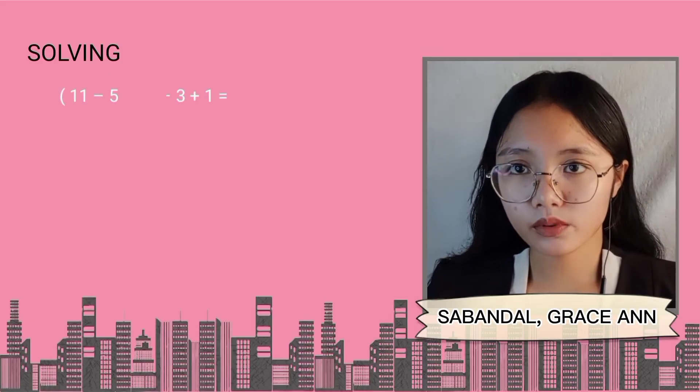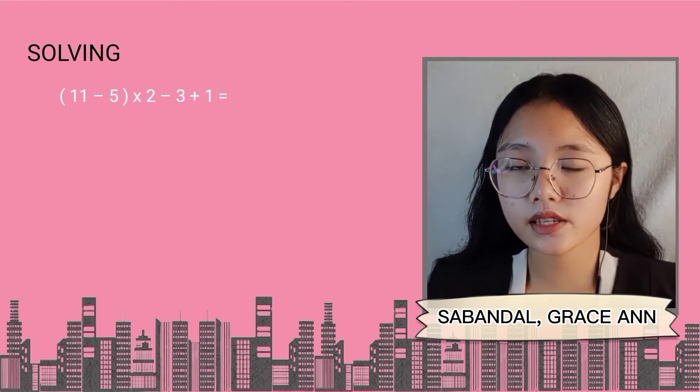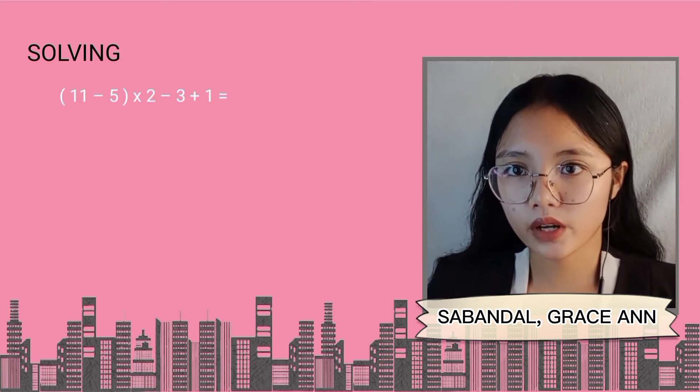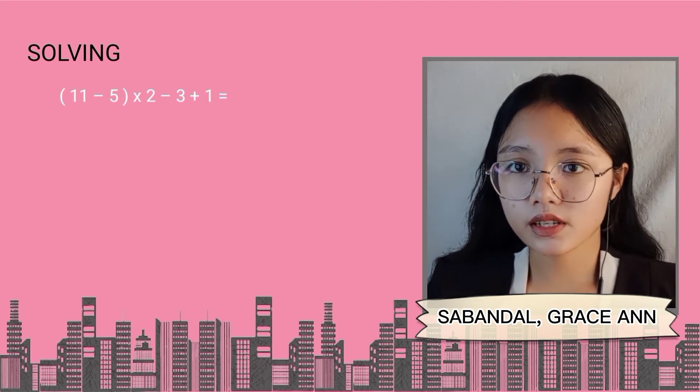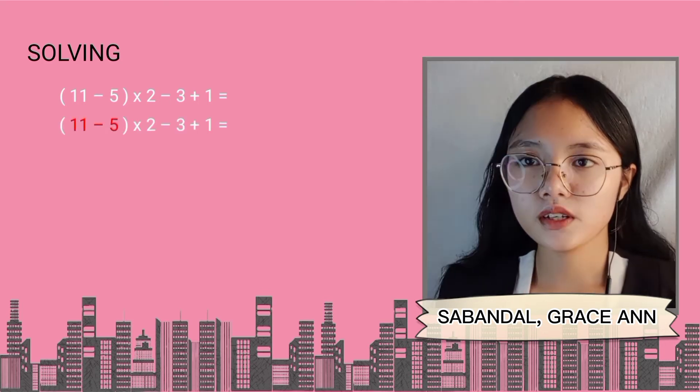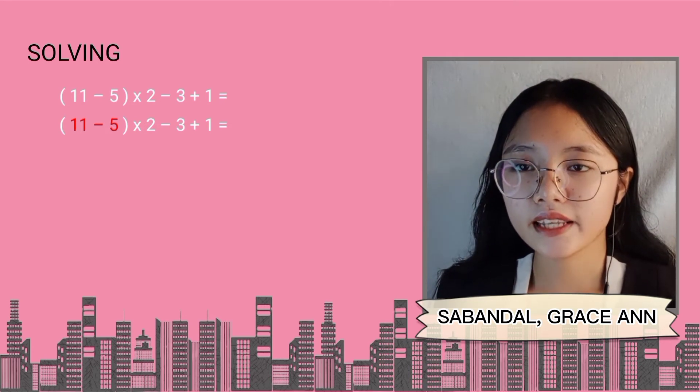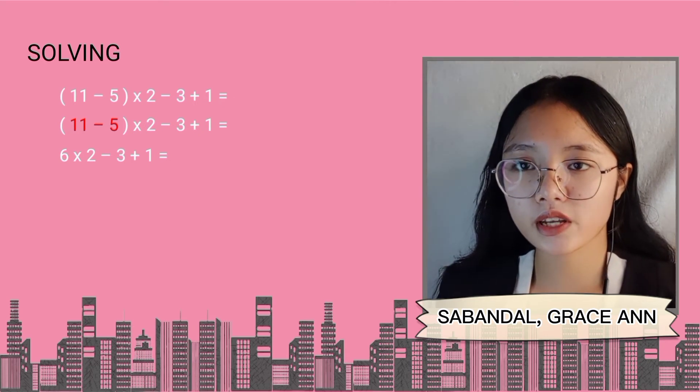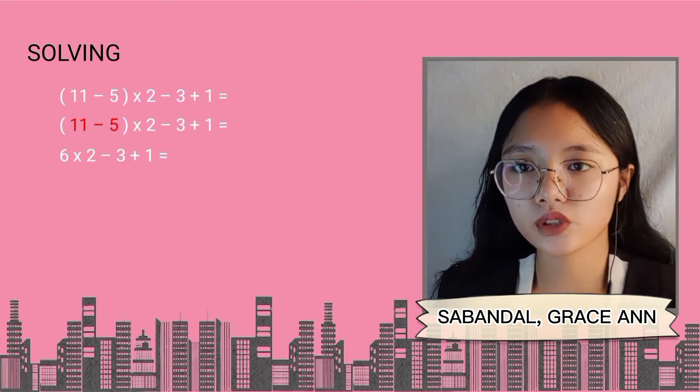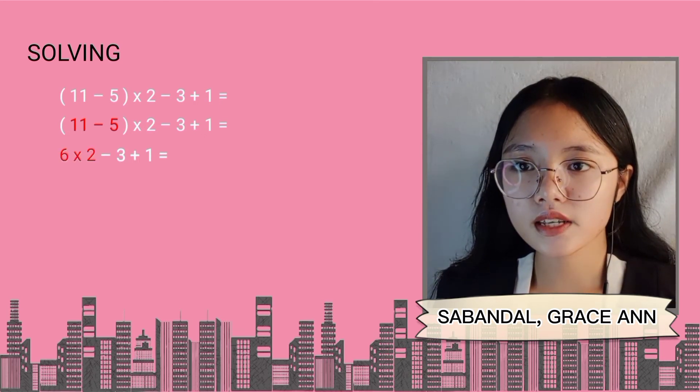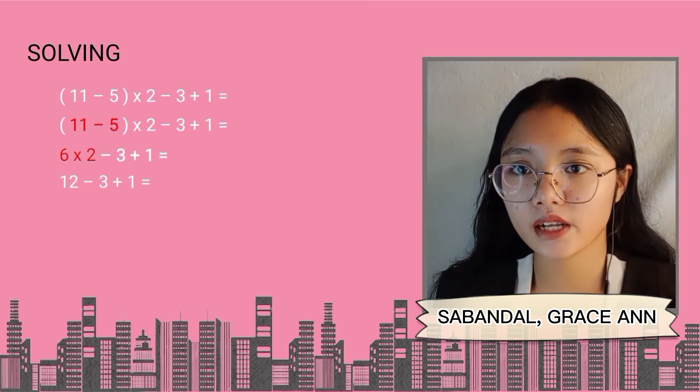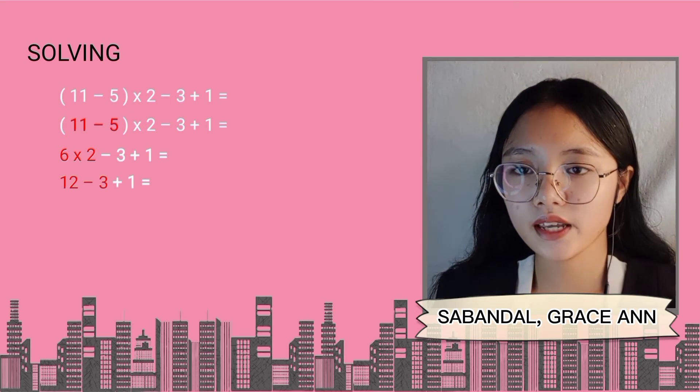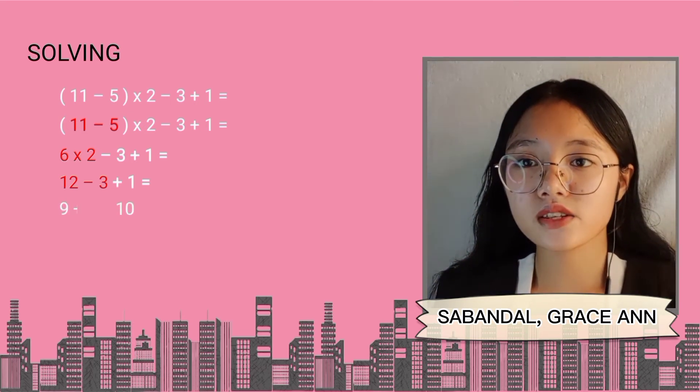Now we have here two examples. First, we have here a mathematical sentence that indicates open brackets 11 minus 5 close brackets times 2 minus 3 plus 1. Now, we have to remove the parenthesis by solving the equation inside the parenthesis. So, 11 minus 5 is equal to 6. Now that we removed it, we have now this mathematical sentence of 6 times 2 minus 3 plus 1. Next is we do multiply. 6 times 2 is equal to 12. Now, we have this mathematical sentence. After that, let's do the last two steps by subtracting and then adding. Now, we have the final answer of 10.